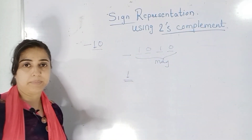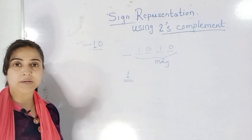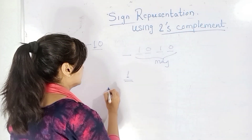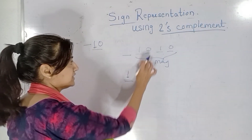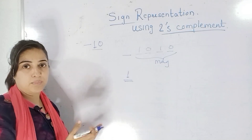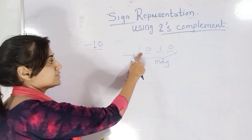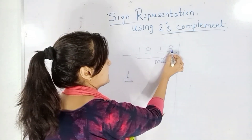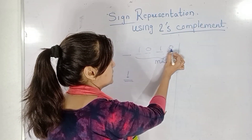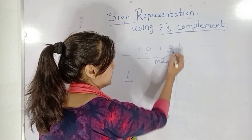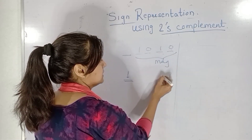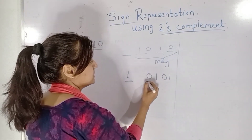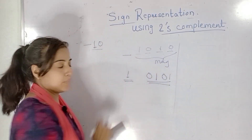To find the 2's complement of this number, first we write the 1's complement. To find the 1's complement, wherever there is a 0 I write 1, and wherever there is a 1 I write 0. So the 1's complement of 1010 is 0101.